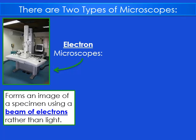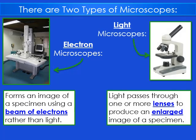A microscope is used to enlarge an image and show detail. There are two types of microscopes. The first is the electron microscope, which forms an image of a specimen using a beam of electrons instead of light. The second is the light microscope — the kind we'll use in class — where light passes through one or more lenses and produces an enlarged image of a specimen.